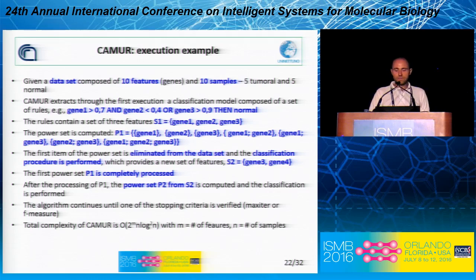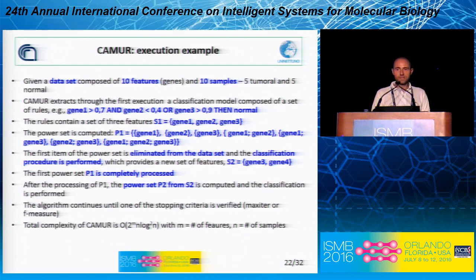Let's see an execution example. If we extract the first rule from the dataset, which is composed of gene 1, gene 2, and gene 3, CAMUR extracts these three genes, computes the power set, and then iteratively eliminates those genes from the original dataset and reruns the classification procedure, extracting new classification models. This process is done iteratively until a given threshold on the classification performance is obtained, or until a given number of iterations are reached. These are the stopping criteria for the software.